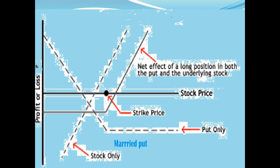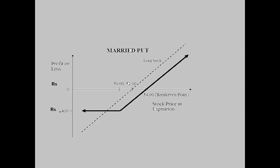In the diagram, the x-axis shows profit and loss, and the y-axis shows the strike price. You can see how the put has been taken and the stock position has been taken. The net effect shows the long position in both the put and the underlying stock. Another example is shown in a similar way for the married put.